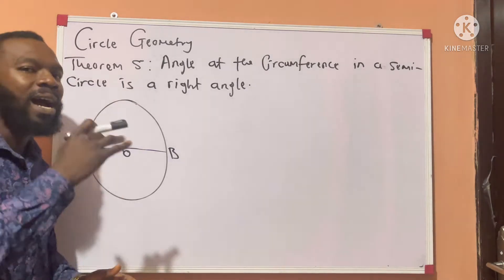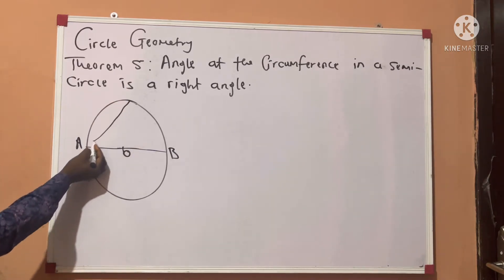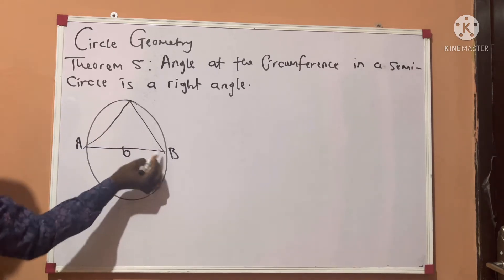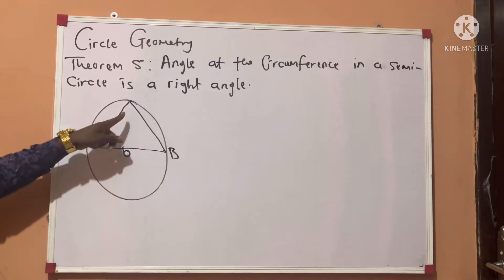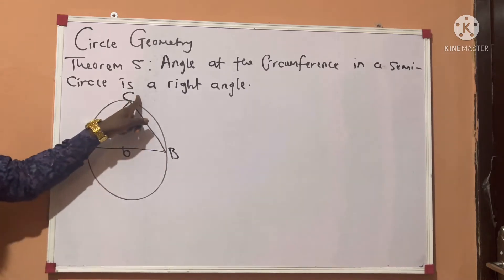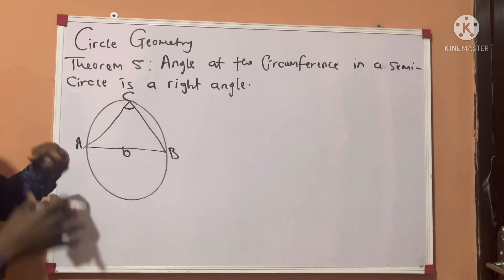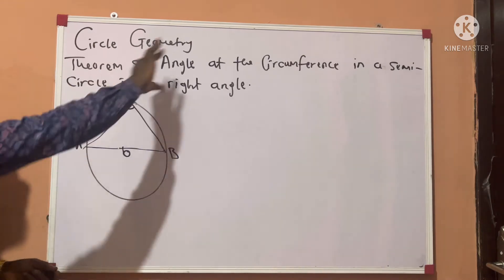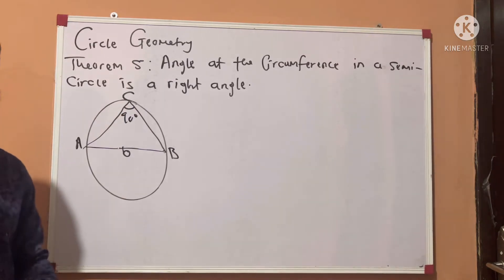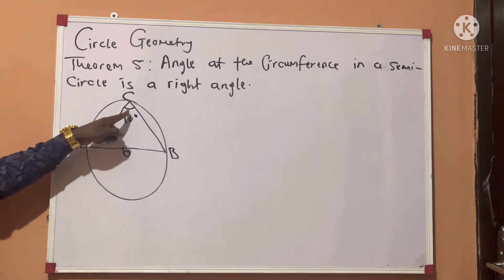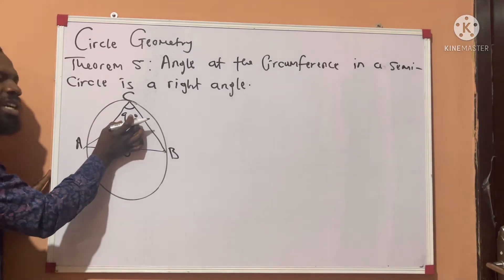Now, how do we form an angle at the circumference in any of the semicircles? Let's draw a chord from a point down here, and then we draw another chord down to point B. At this chord, let's call this point C. At point C, an angle is formed. This angle that is formed is at the circumference in this part of the semicircle. And according to the theorem, this angle is 90 degrees — it is a right angle. So, how do we know that this angle is actually 90 degrees? We are going to prove it.